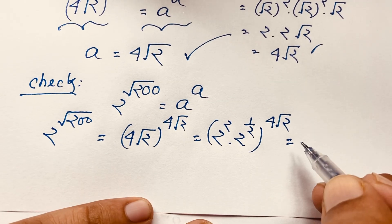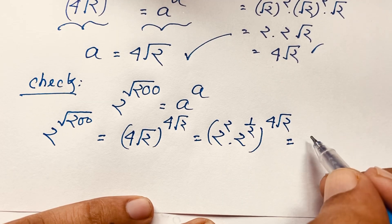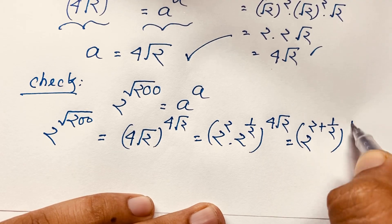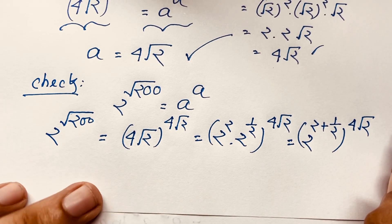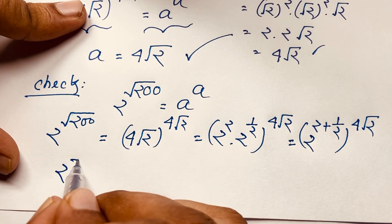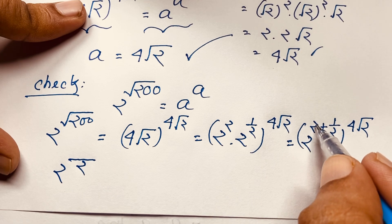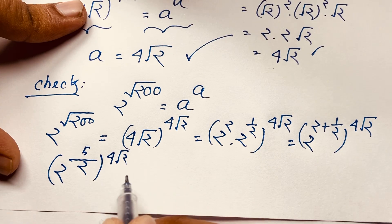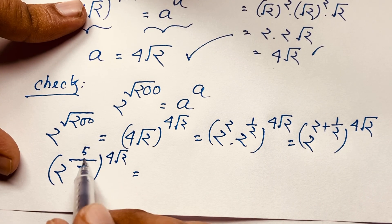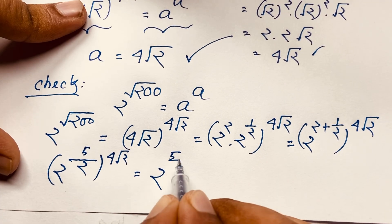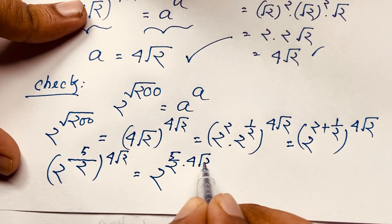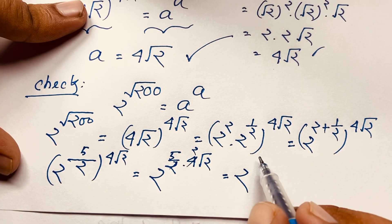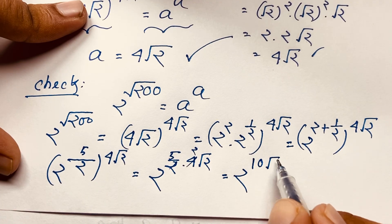Coming to the exponential formula: since the bases are the same, I add the exponents. It will be 2^(2 + 1/2) to the power 4√2. The least common denominator is 2, so 2×2 = 4, plus 1 gives 5 over 2. So we get 2^(5/2) to the power 4√2, which equals 2^(5/2 × 4√2). The 2 divides into 4 giving 2, so it becomes 2^(5 × 2 × √2) = 2^(10√2).